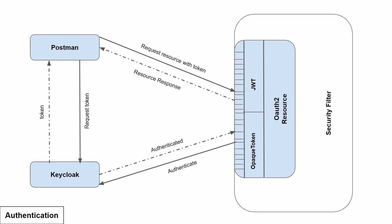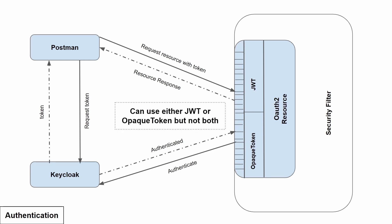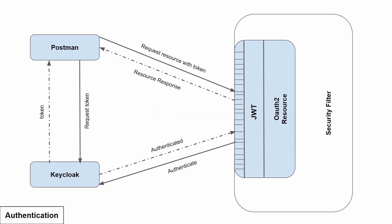If we zoom in a bit more, what the OAuth2 Resource Library does is use two ways of authentication: one is JWT and another is the opaque token. You cannot use both of them together — you have to either use JWT or opaque token in an application, not both at once, otherwise it will give you an error.